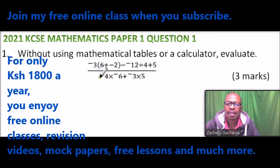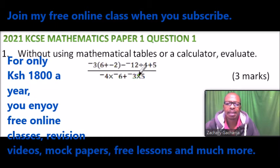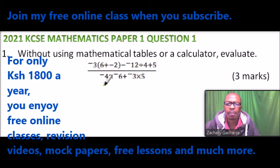We have minus 3 into bracket 6 plus minus 2, close the bracket, minus minus 12, divide by 4 plus 5, divided by minus 4 times minus 6 plus minus 3 times 5.